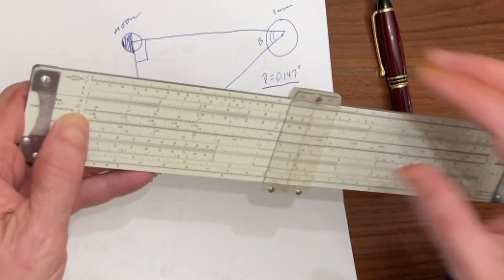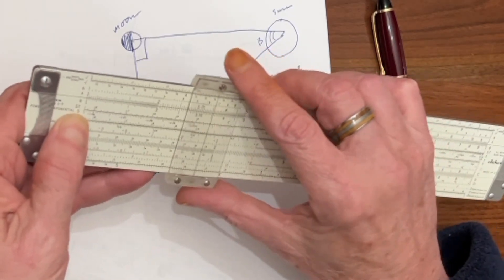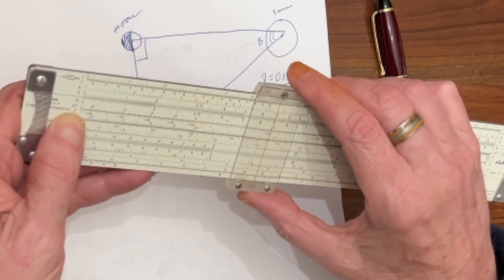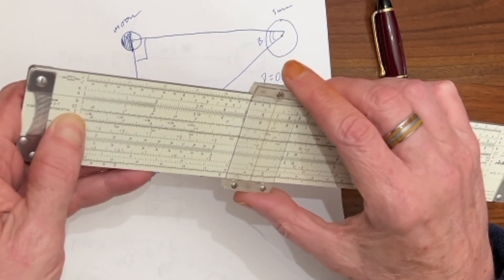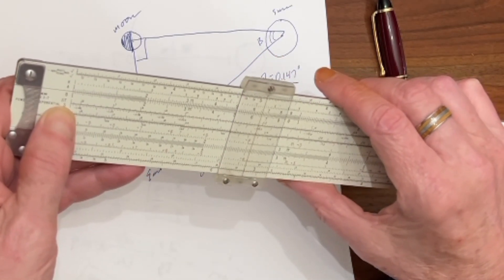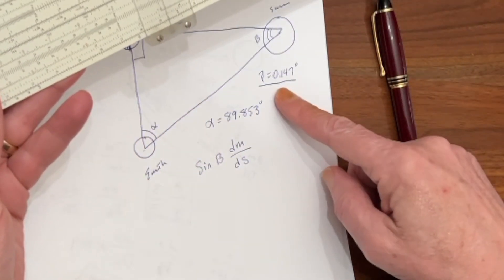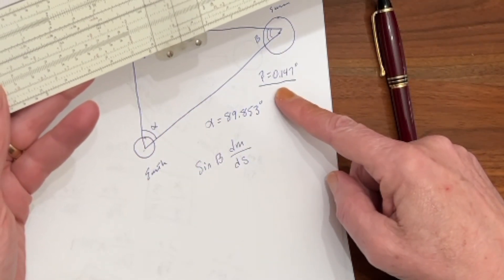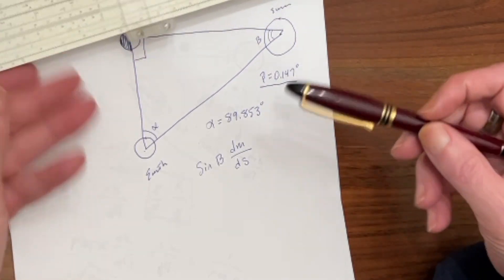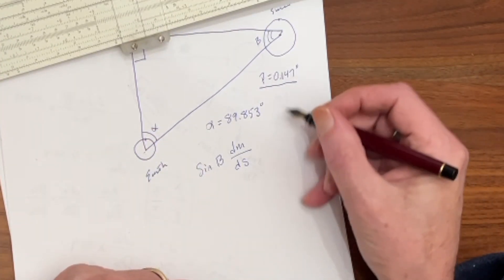And what we're going to do is we're going to come out to 1.47 degrees. Now, I realize that this is 0.147, but that just means that our answer, the sine of that angle, will be in the form of 0.00 something.